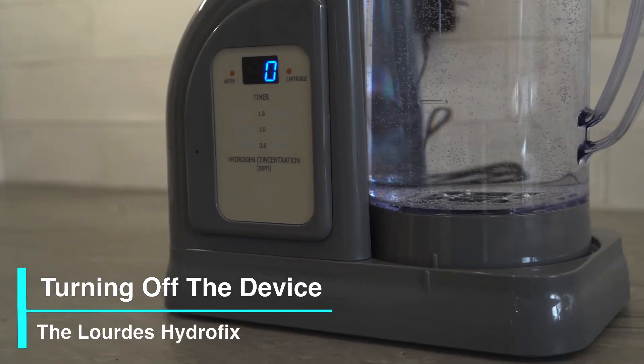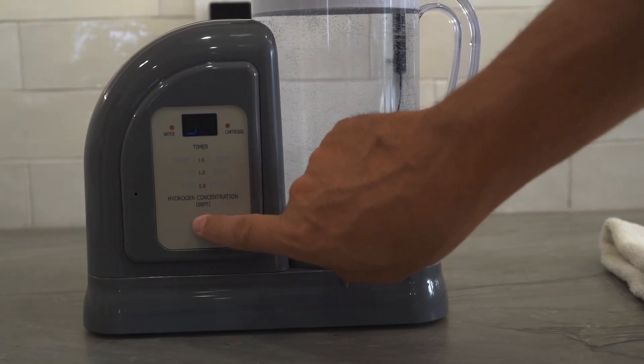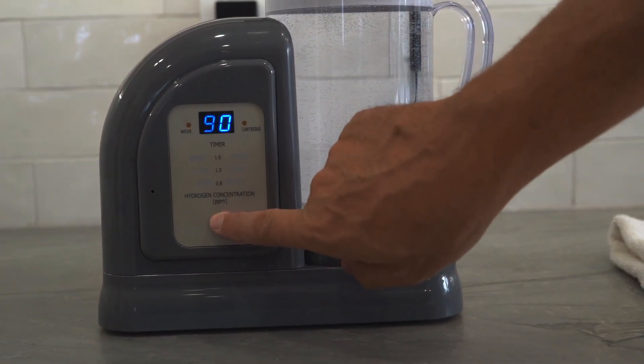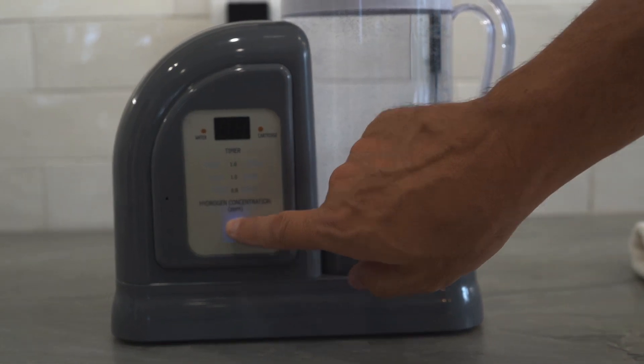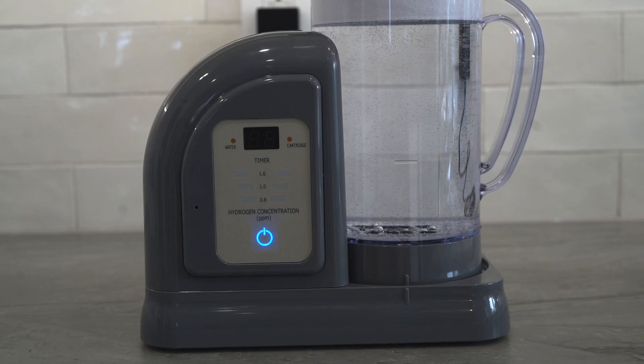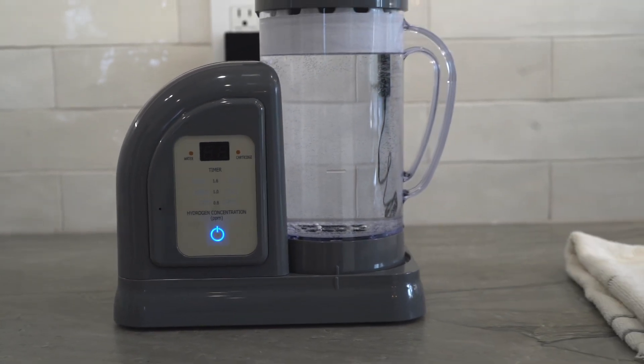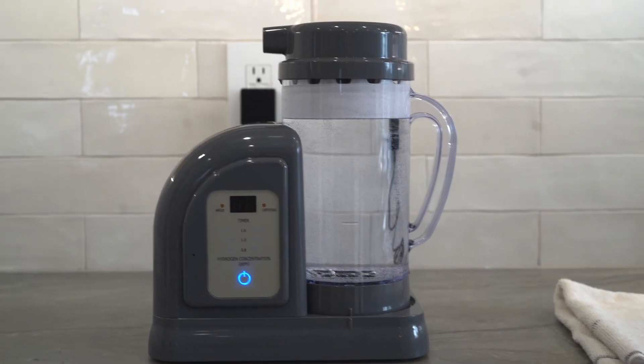How to turn off the device. To turn off the device, you must press and hold the power button twice. The first time you press and hold the power button, the illumination lights will turn off. Press and hold the power button again to turn off the device. Three beeps will sound and only the power button will remain lit. At this point, the device has been turned off and hydrogen production will stop.